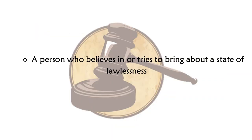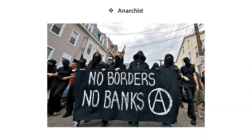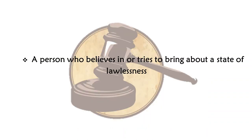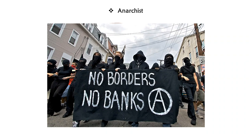A person who believes in or tries to bring about a state of lawlessness would be called an anarchist. In the true definition of anarchism, this description is a bit flawed — it depicts anarchists in a bad light. Anarchism is more about a person who wants no authority over him. You can do a Google search to learn more.